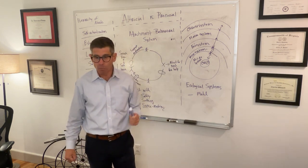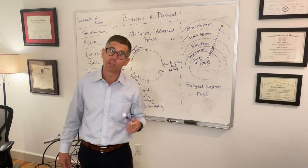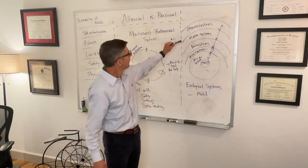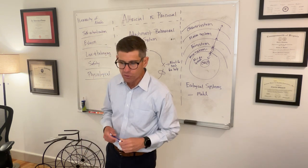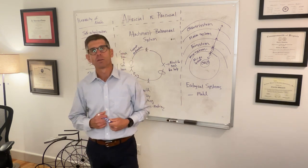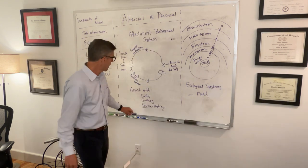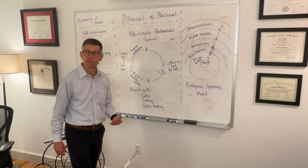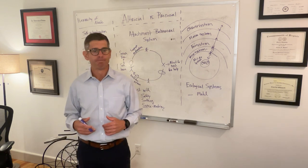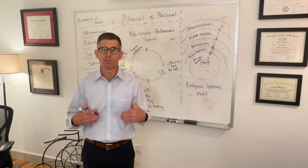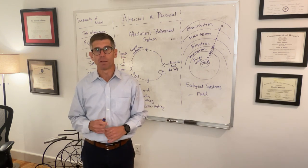Beyond the exosystem is the macrosystem — the attitudes and ideologies of the culture in which the child lives. On the outer rim is the chronosystem — the environmental changes that occur over the life course of the child. These are all things that can influence how the world is organized, how people make sense of the world, and what they come to expect when it comes to relating to themselves and others.